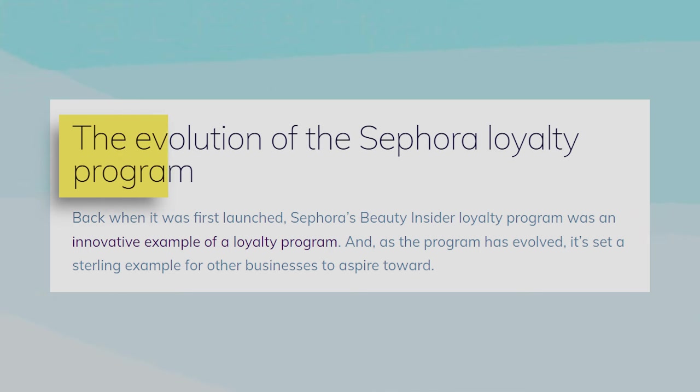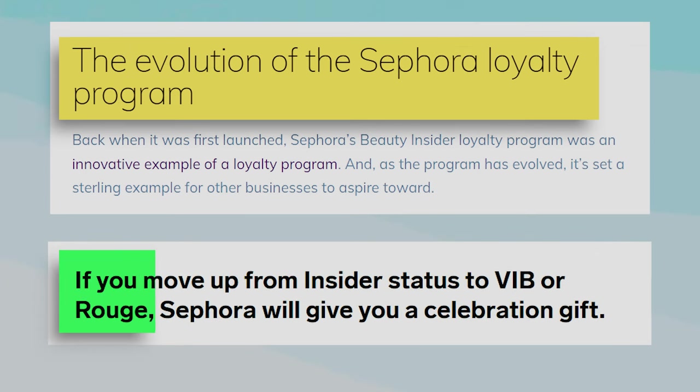2007 saw the introduction of Sephora's client loyalty program, The Beauty Insider, offering customers exclusive benefits and rewards accessible both in-store and online. This program further evolved with the launch of the VIB, Very Important Beauty Insider, in 2009 and Rouge in 2013, offering even more exclusive perks, including special gifts, invitations to events, and early access to select products.